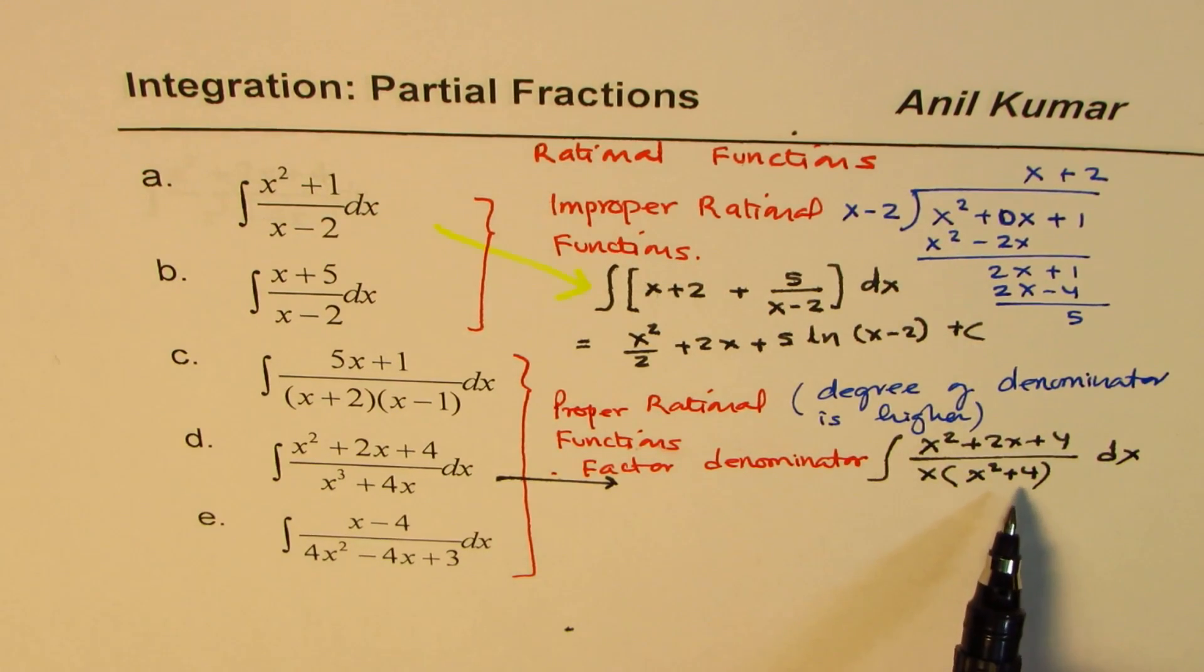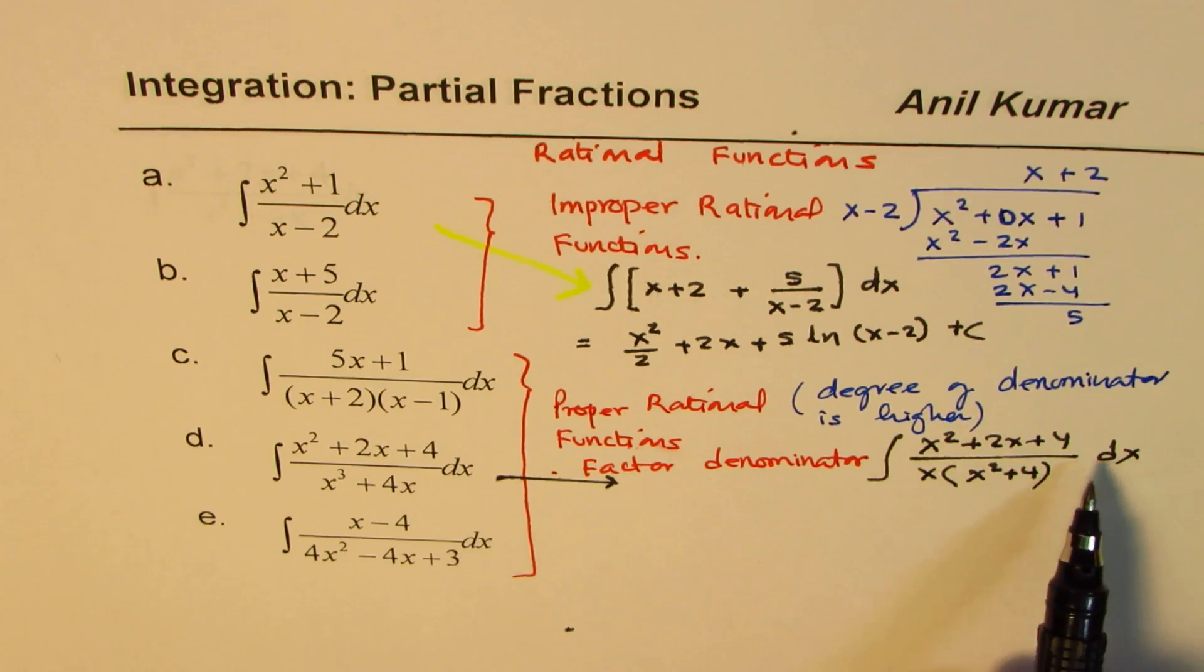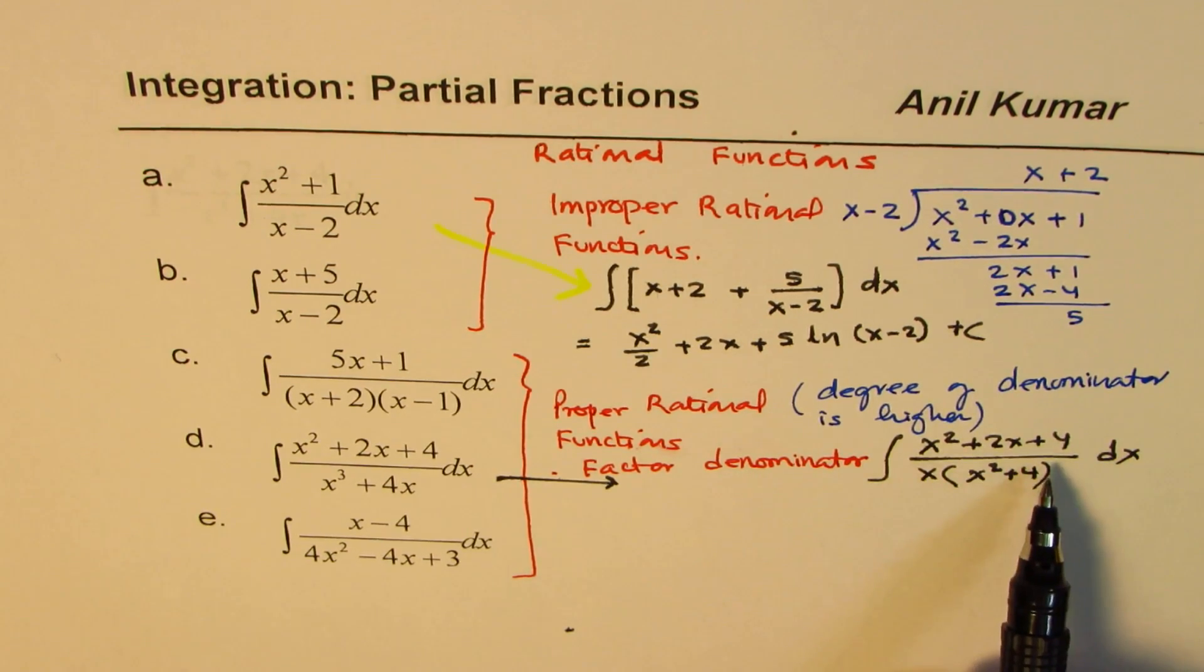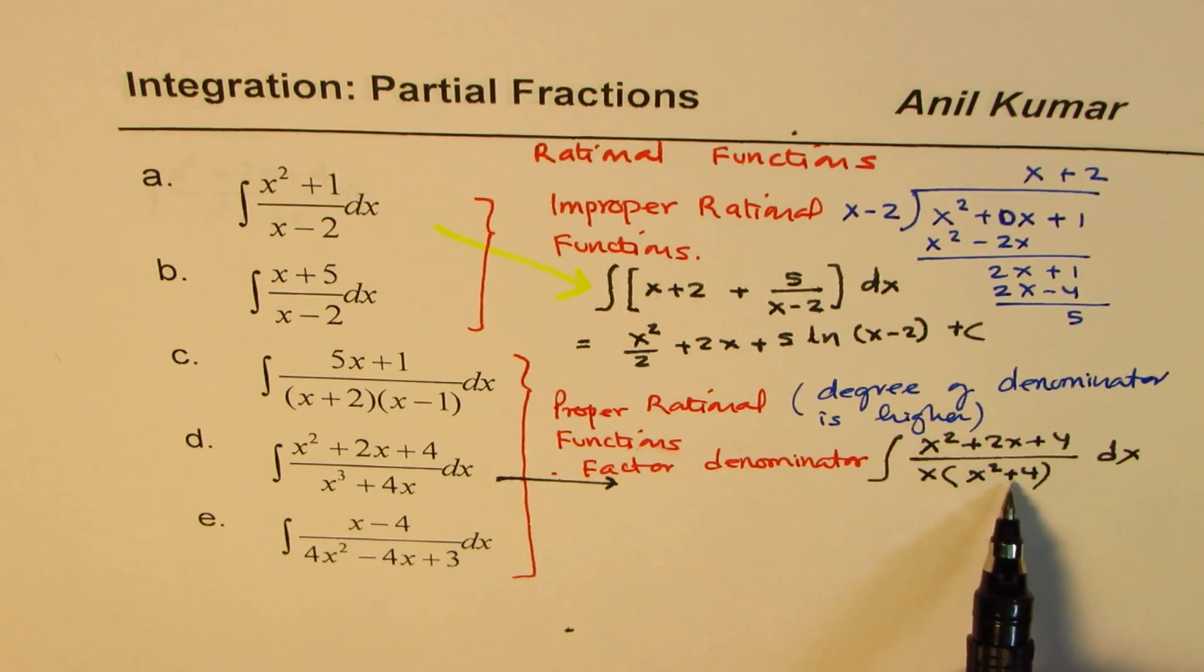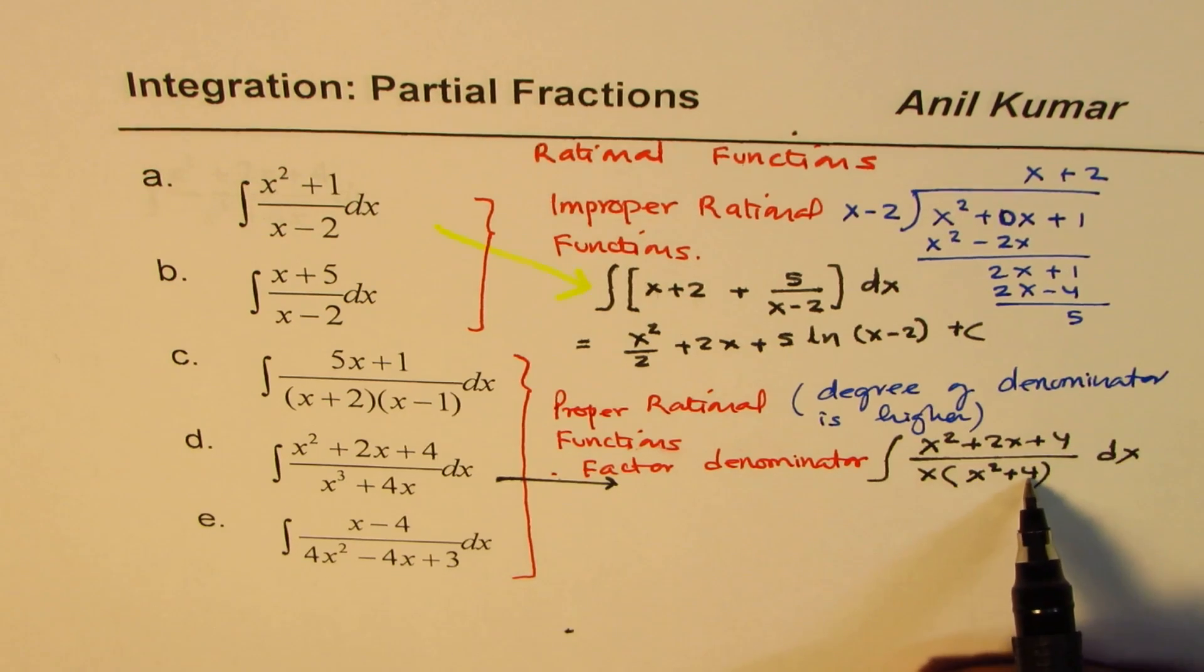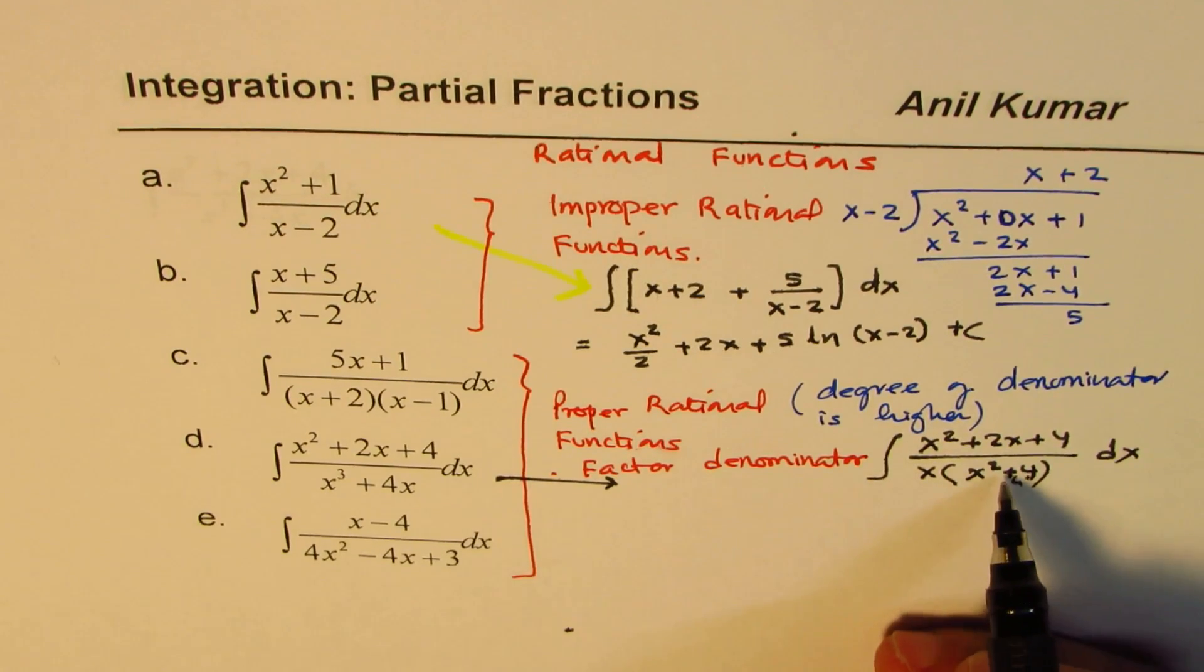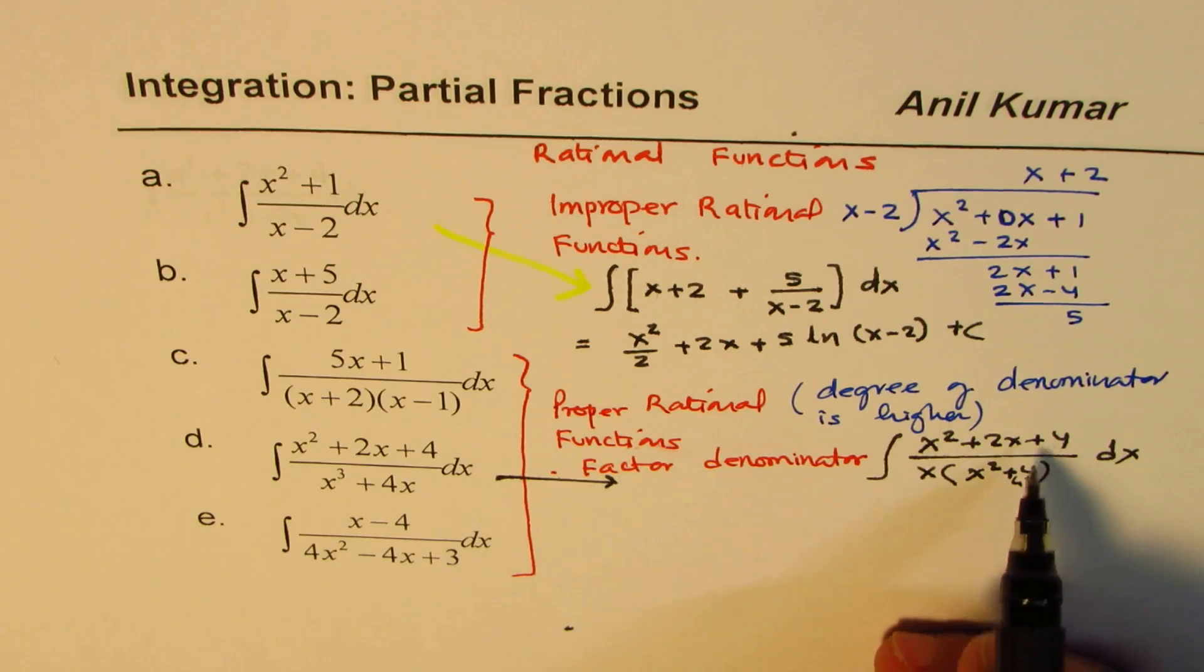Now, x square plus 4 cannot be further factored. Remember that part. So you could actually write it as a partial factor and find the integral of this function. Remember, we use, when it is x square plus 4 in the denominator, you may use the tan inverse function as your result, right? So it would be 1 over a, which is 1 over 2 in this case, and tan inverse of this by 2, x by 2. So that is your answer for the other factor where the denominator is x square plus 4. That helps.